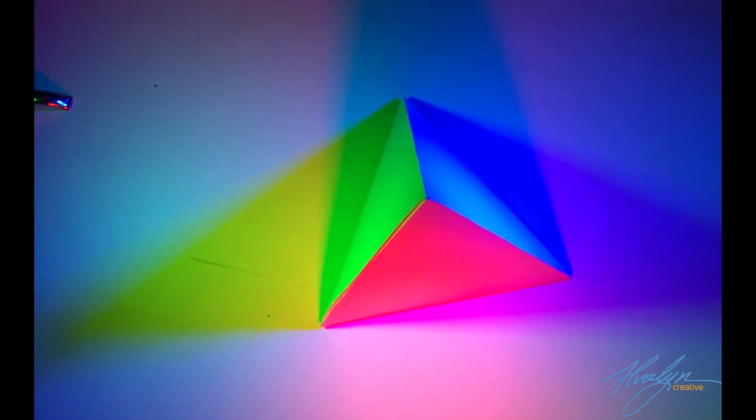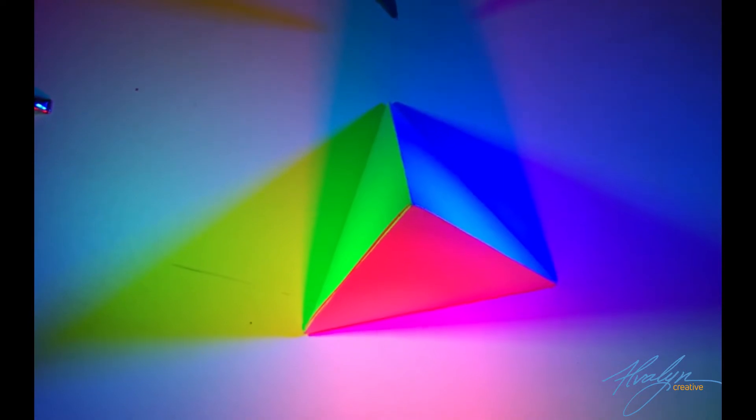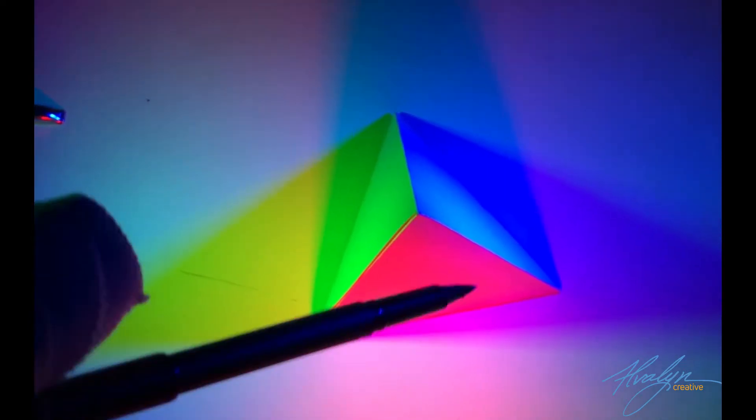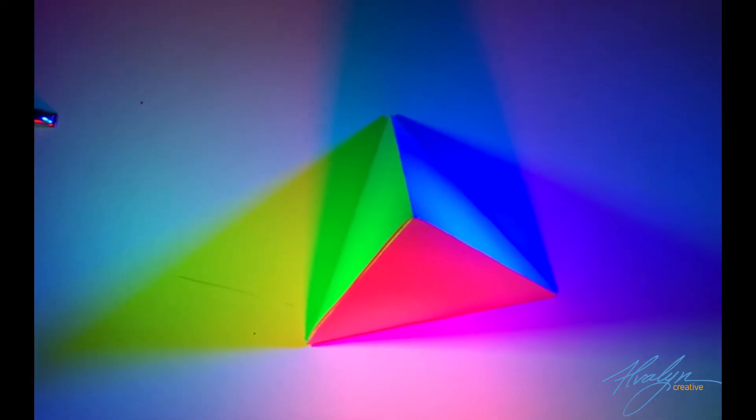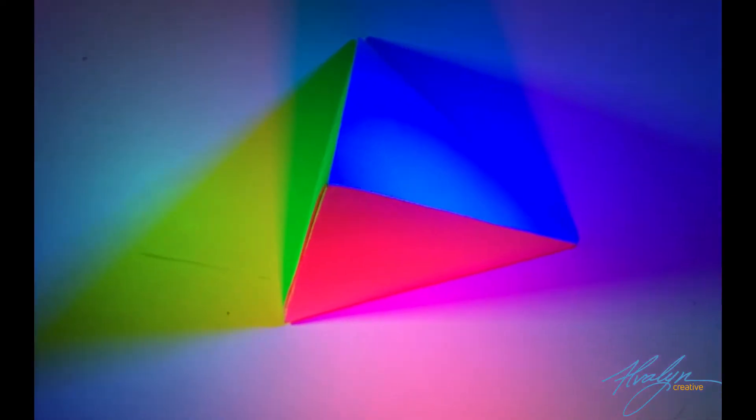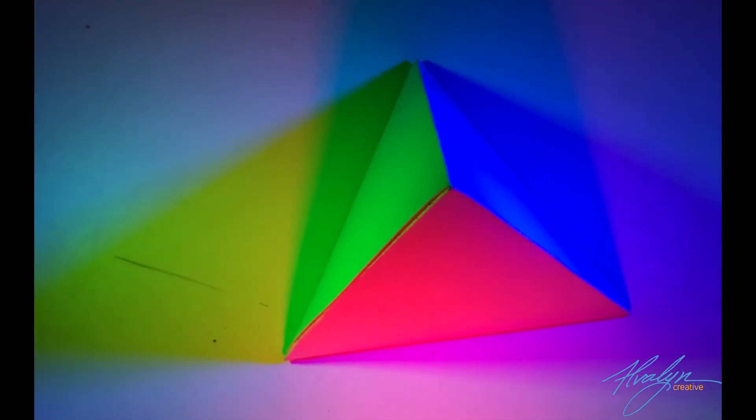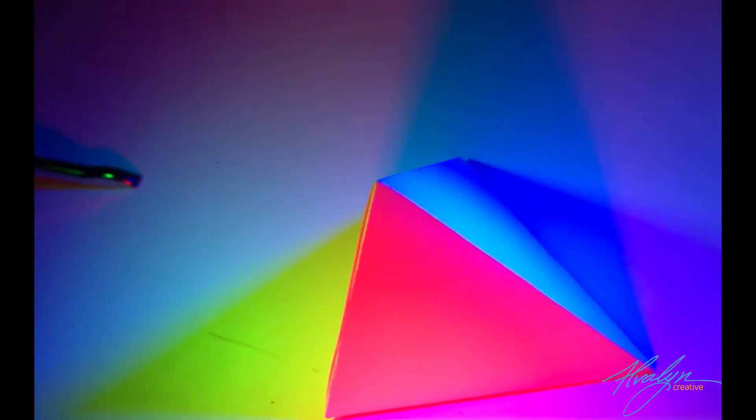And over here in this cast shadow, there's cyan because the red light is being blocked by the form. So that's additive color mixing. It's kind of cool, huh?